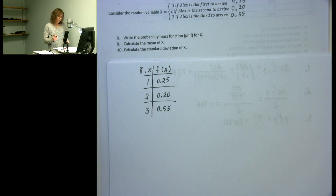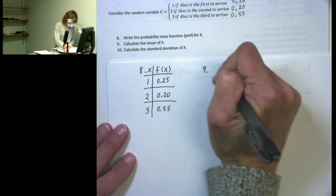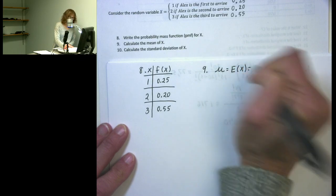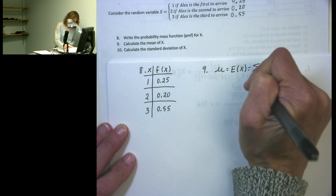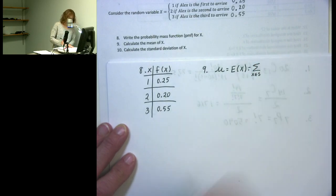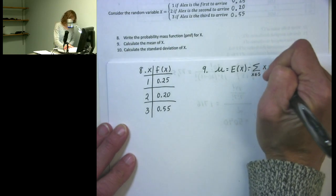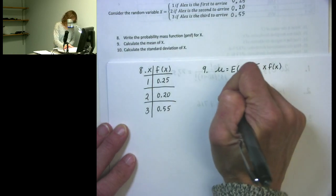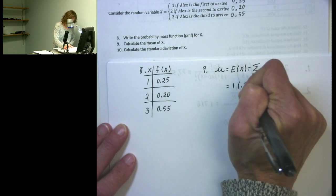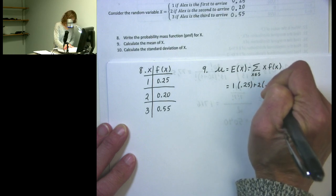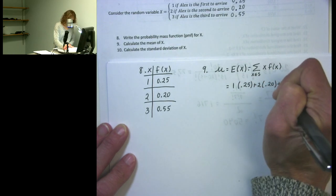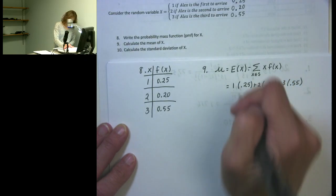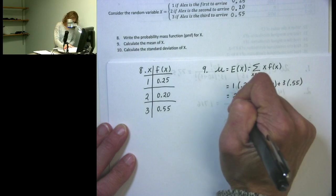Now I'll calculate the mean of X, which is the expected value of X. I sum x times f(x) over all values in the support: 1 times 0.25, plus 2 times 0.20, plus 3 times 0.55. Altogether that gives a mean of 2.3.